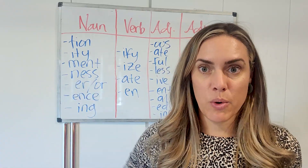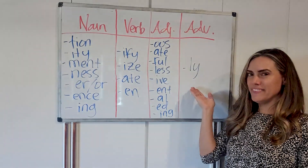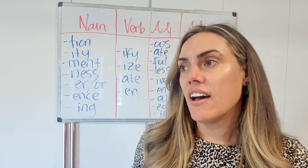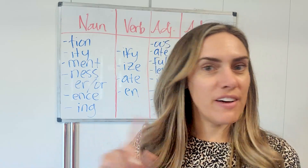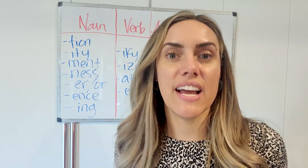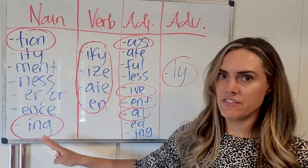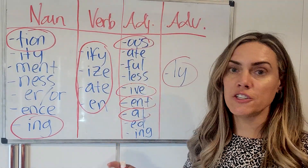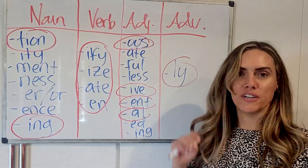The last list is adverbs — and it's a short one. Just one: -ly. Like I said earlier: considerably, beautifully, confidently. Now, 'lovely' ends with -ly but it's actually an adjective — it depends on what it's describing. Here I've circled the most common suffixes: -tion and -ing for nouns (gerunds); -ify, -ize, -ate, -en for verbs; -ous, -ive, -ent, -al for adjectives; and of course -ly for adverbs.